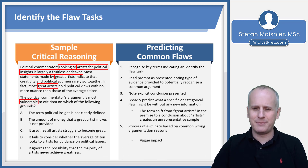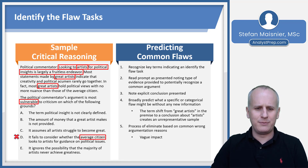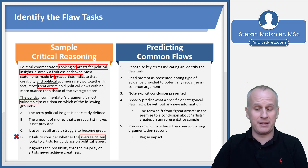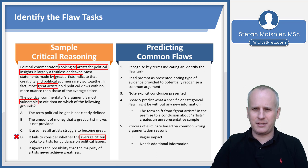Processing the answer choices through elimination: starting with vague impacts, one choice asks whether the average citizen looks to artists for guidance on political issues. The average citizen isn't even in the conclusion — it's in the premise — so failing to consider this has no clear impact on the conclusion whatsoever. Another wrong answer involves the amount of money a great artist makes — how does money relate to political insights? That requires additional information we don't have.